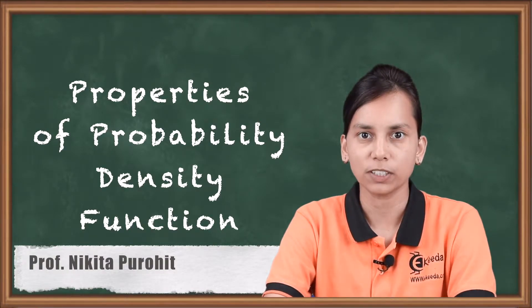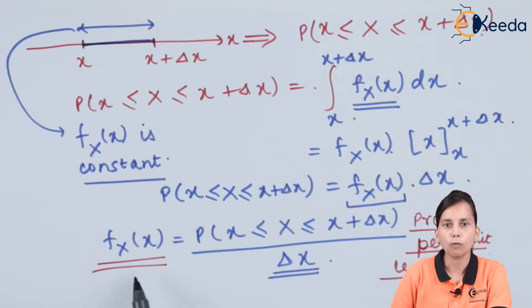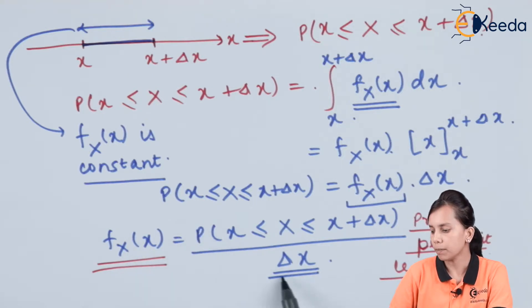Hello friends, in this video we are going to discuss the properties of probability density function. In the previous video we defined the definition of probability density function — that the probability density function is not probability at all, but it is a function in which it is probability per unit length. That is, probability is divided by unit length, per unit change on the real axis. This is how we define that f(x), the probability density function, is actually equal to probability per unit length.